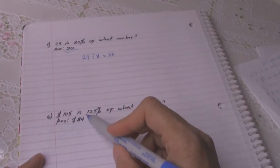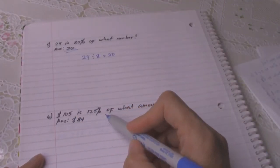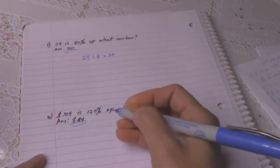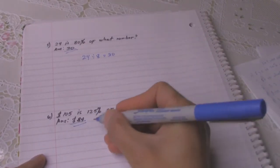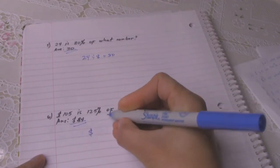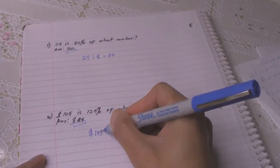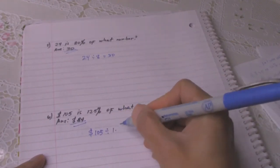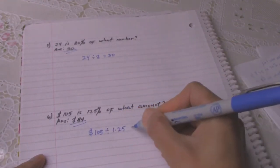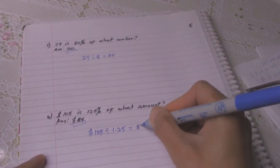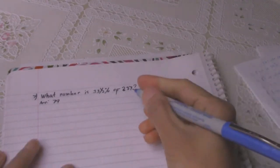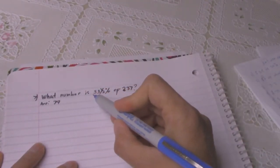Number 6: 105 is 125 percent of what amount? The answer is 84. To get the answer, 105 divided by 1.25, the answer is 84 dollars.